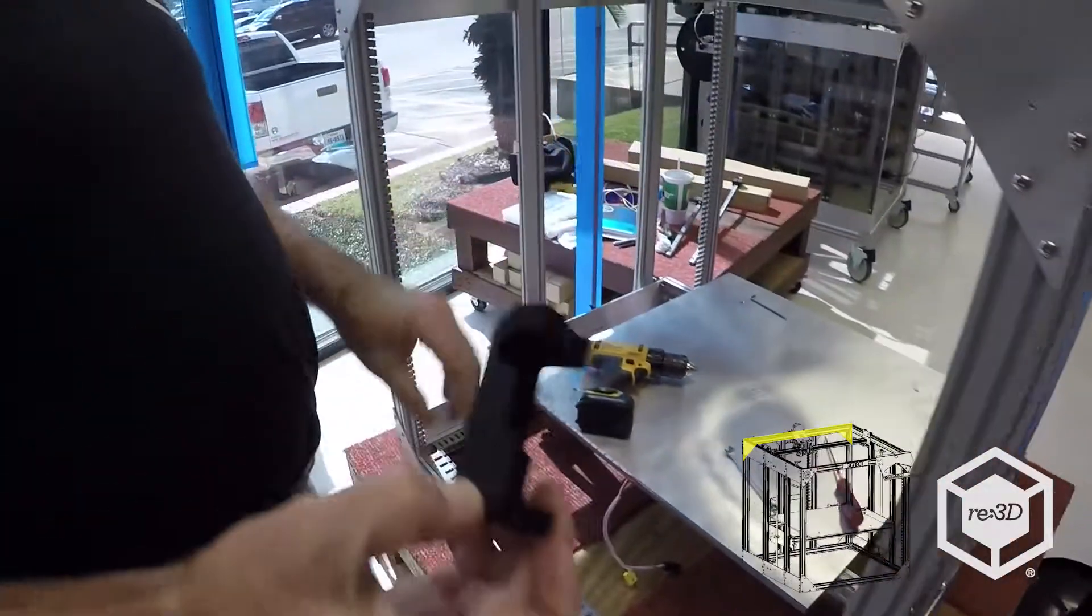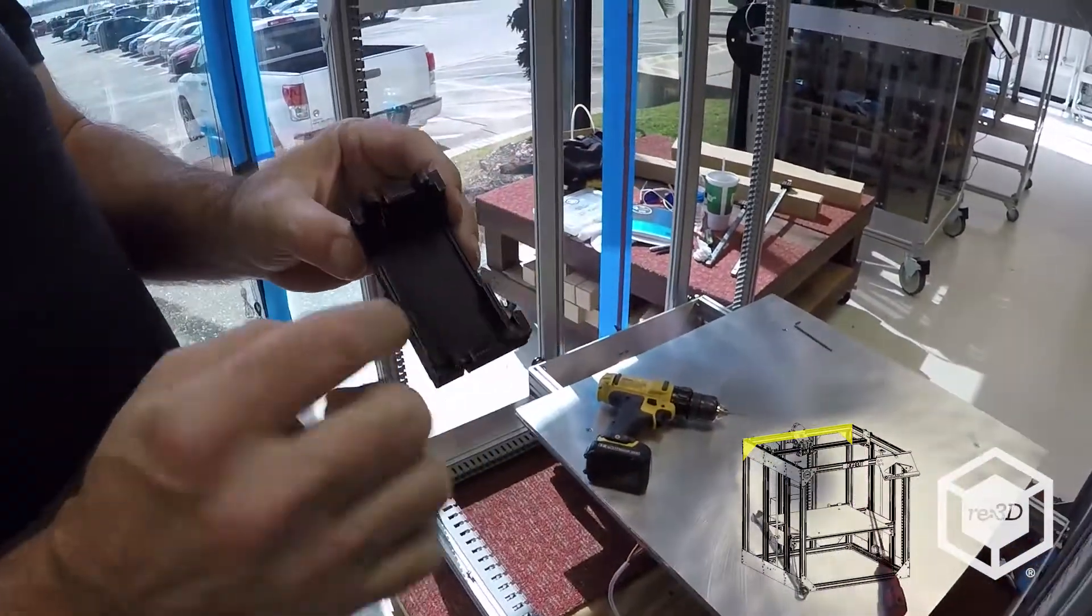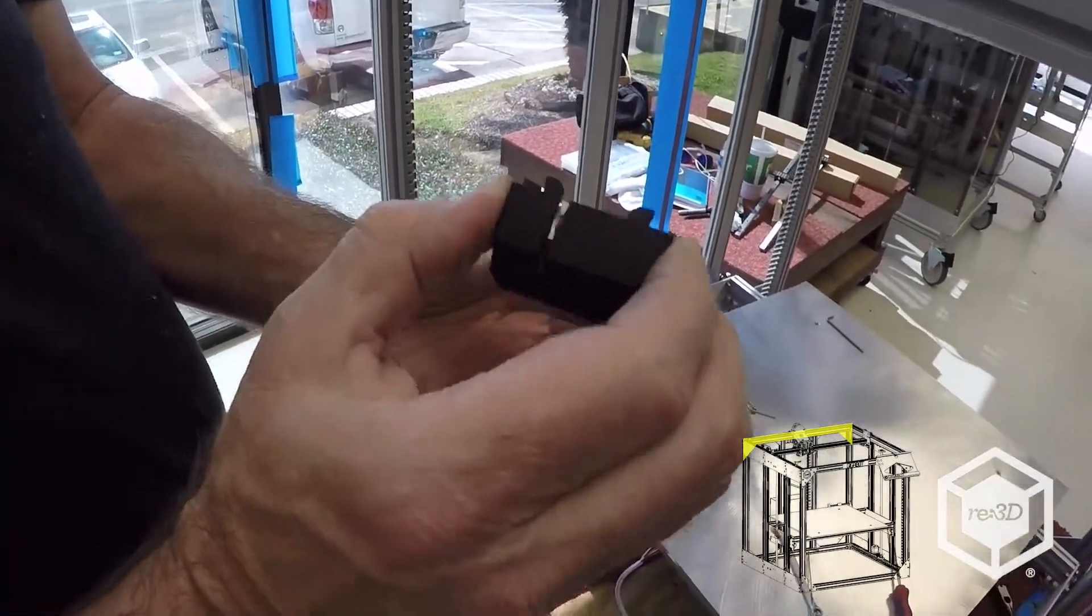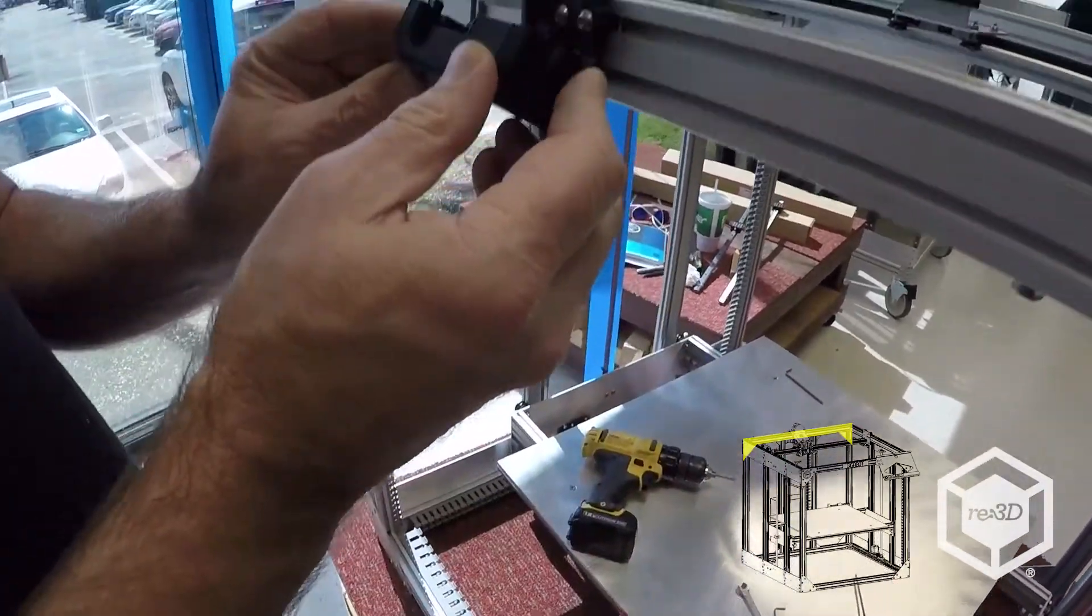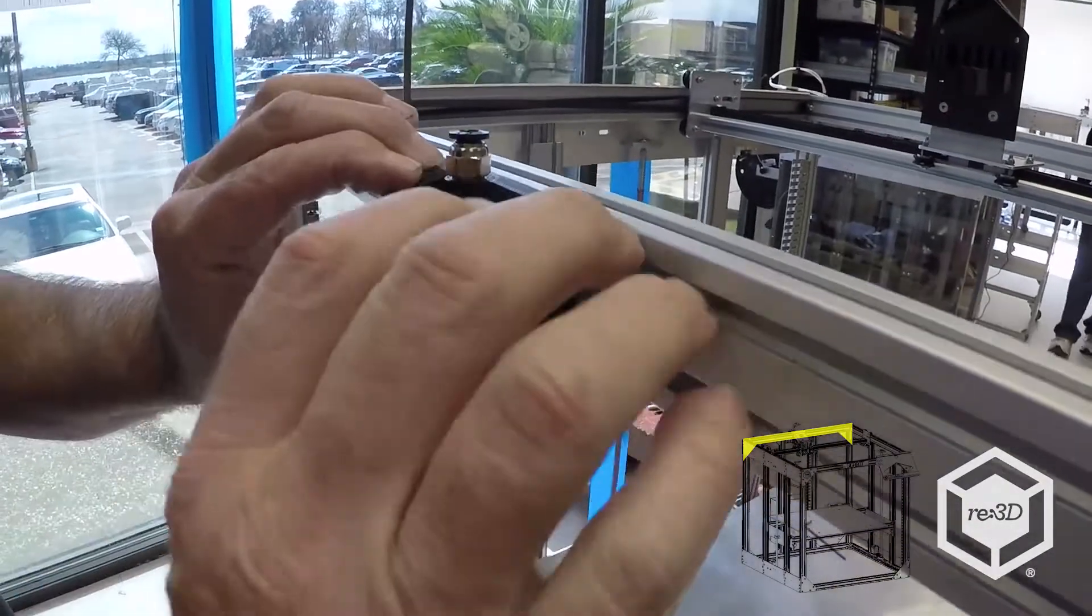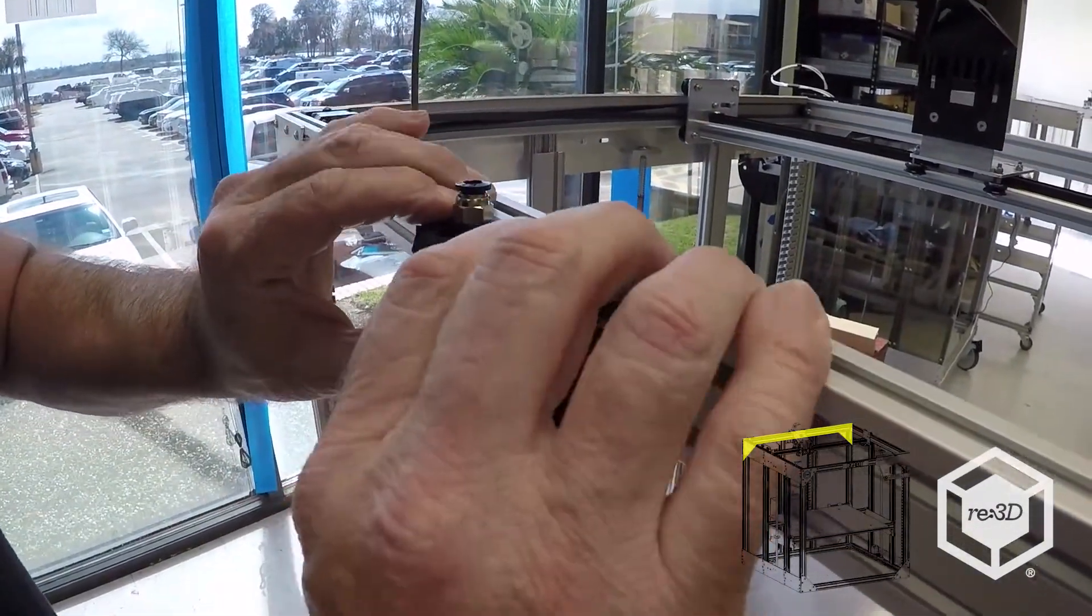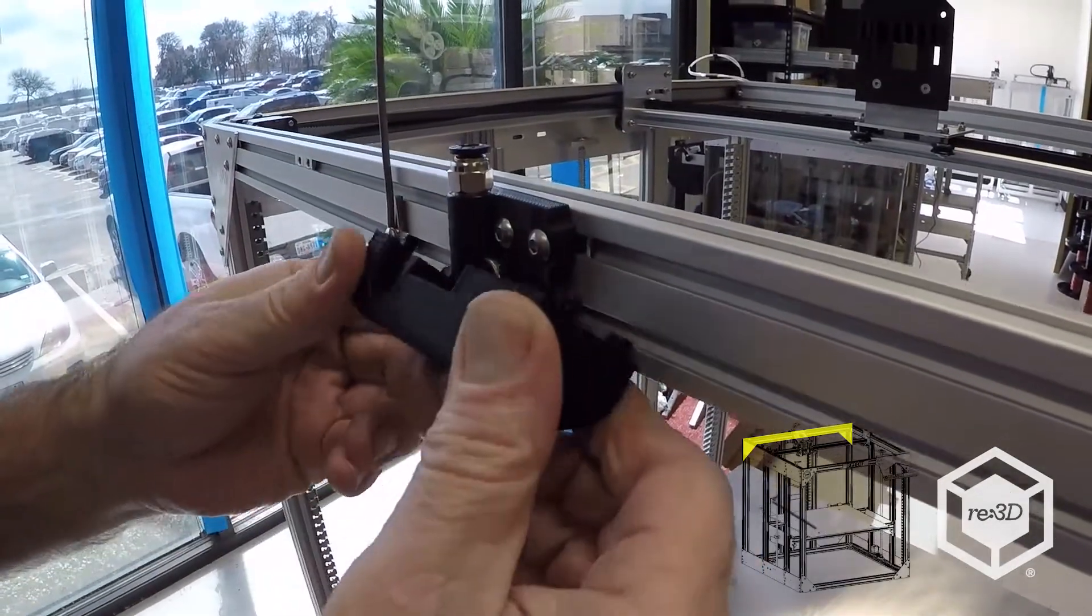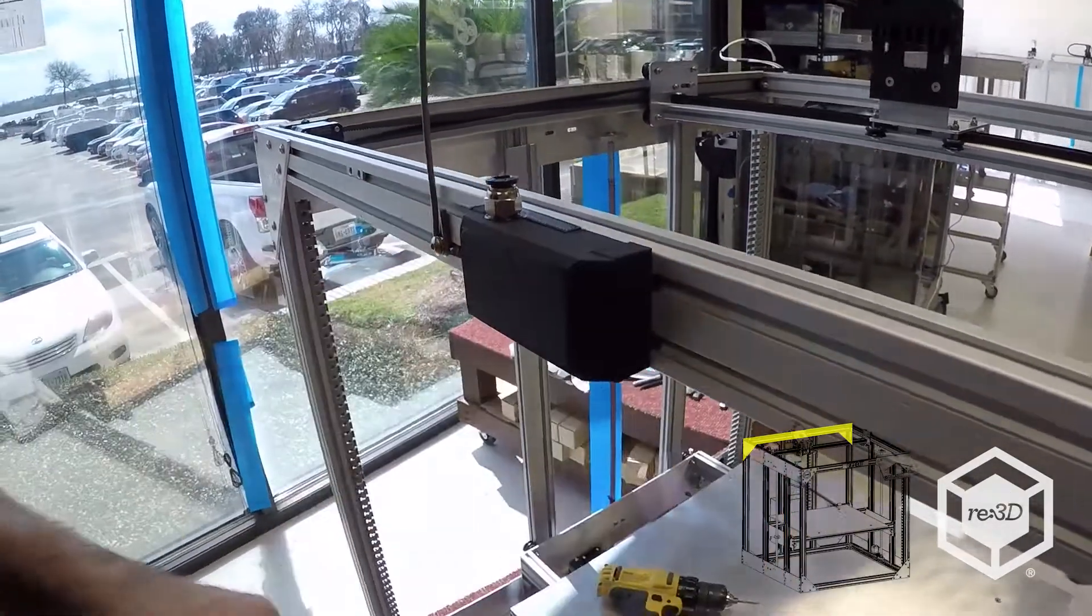So in order to put the filament detector cover on, you want to start the teeth in the bottom first because you notice you can press it with the gap we've got printed into it. So start the teeth in the bottom and then just push down on the top as you push in. Just like that.